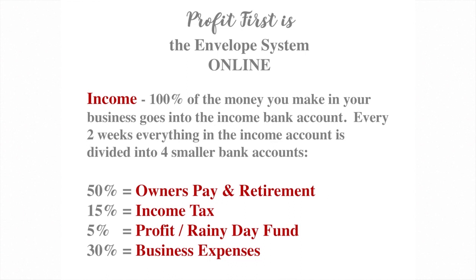The first account is our income account — 100% of the money coming into your business goes here, whether that's creation fees, portrait sales, paintings, all of it. Every two weeks, you split that money into the smaller accounts: 50% goes into owner's pay and retirement, and 15% goes into income tax.